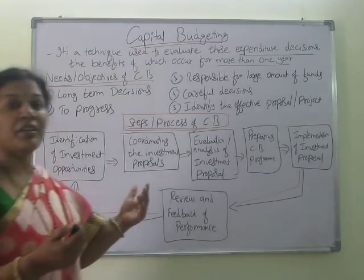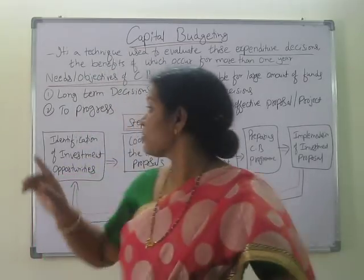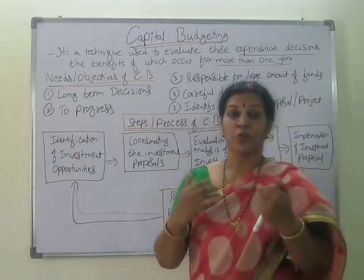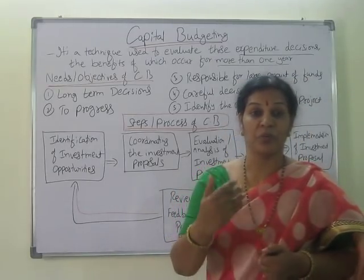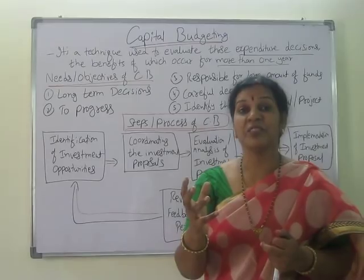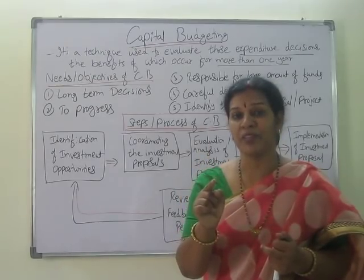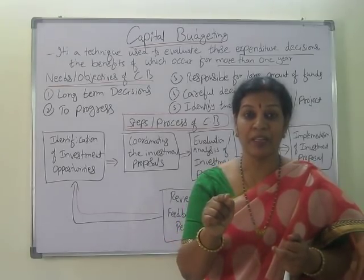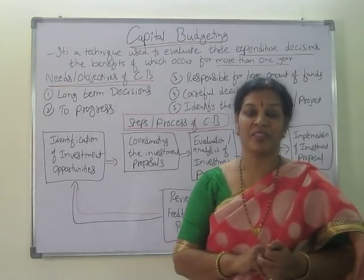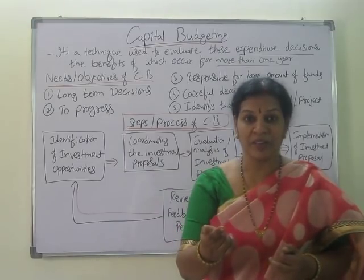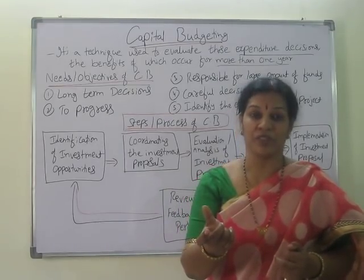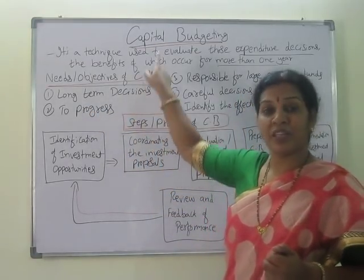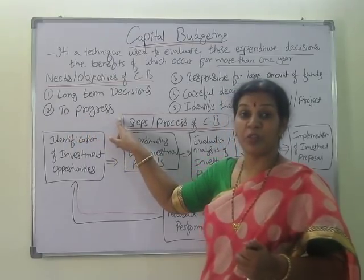The main objectives or needs of capital budgeting: the first one is long-term decisions. Whenever you want to take long-term decisions — how much you want to invest, where you want to invest — long term is always given preference because in the long term we have much more risk. If long-term decisions are not taken properly, the risk will become a loss. We take risks, but at the cost of benefit. That is why we have to take careful long-term decisions in capital budgeting.